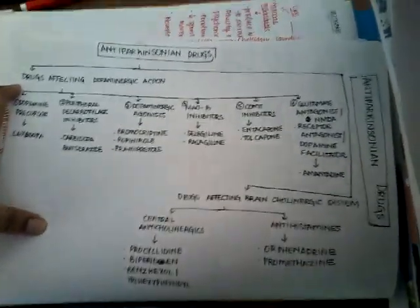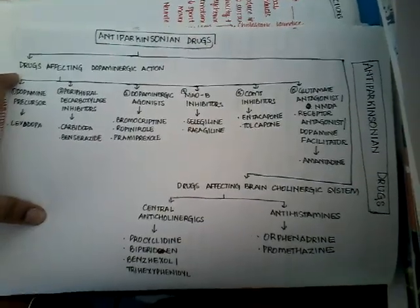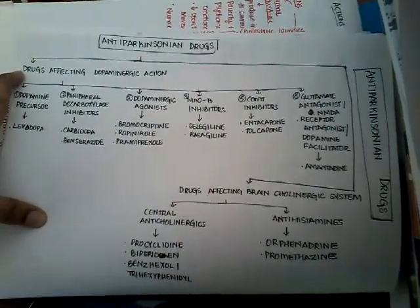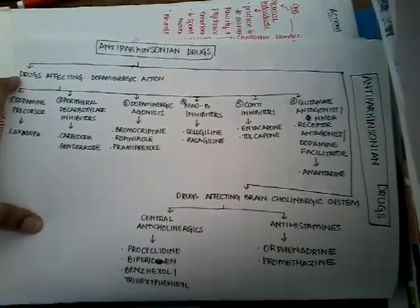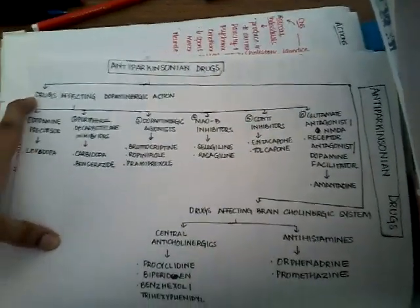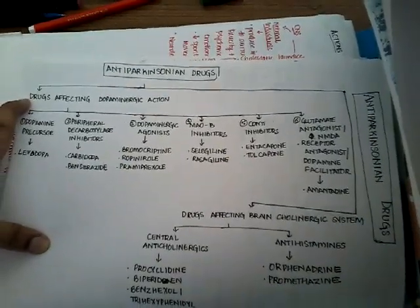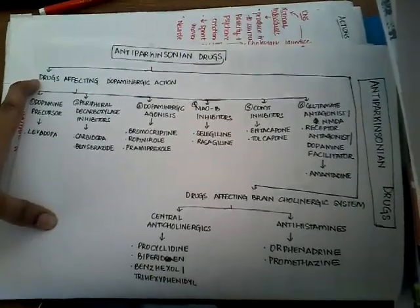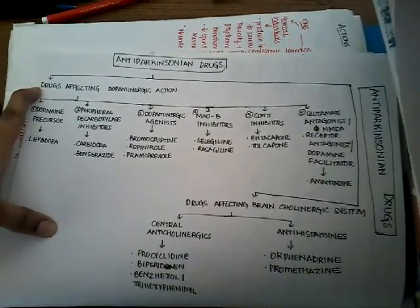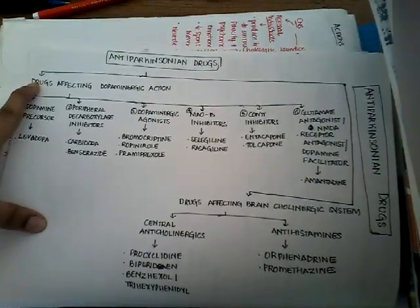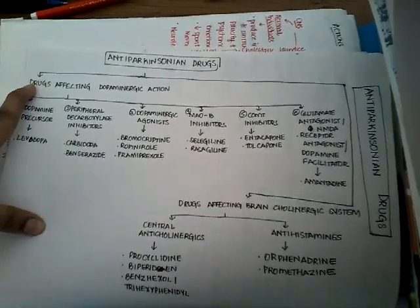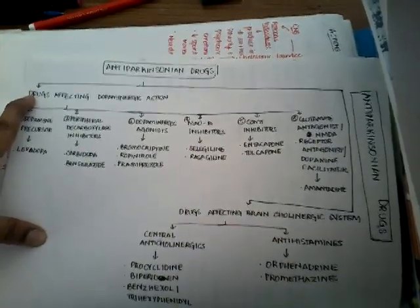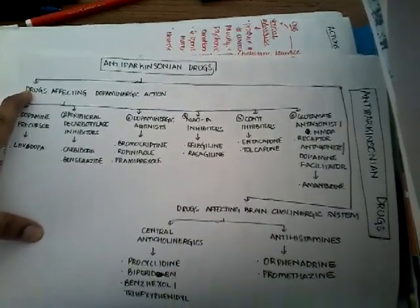The drugs affecting the dopaminergic actions are most commonly used. Among them, the most common drug is the dopamine precursor levodopa, which enters the blood-brain barrier and gets converted into dopamine. The second drug is peripheral decarboxylase inhibitors, which include carbidopa and benserazide. These inhibit the conversion of levodopa into dopamine peripherally.